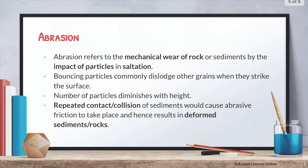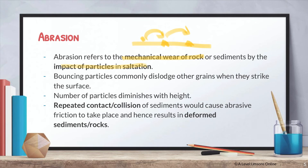Moving on, we have abrasion. Abrasion — similar to what you've learned in rivers — is essentially the mechanical wear of rock or sediments by the impact of particles in saltation. Saltation is a process whereby sediments skip along the ground; when they skip and hit the surface, that causes abrasion — the wearing of sediments or rock on the ground. The bouncing particles commonly dislodge other grains when they strike the surface, and the number of particles diminishes with height. The repeated collision of sediments causes abrasive friction, resulting in deformed sediments and rocks.